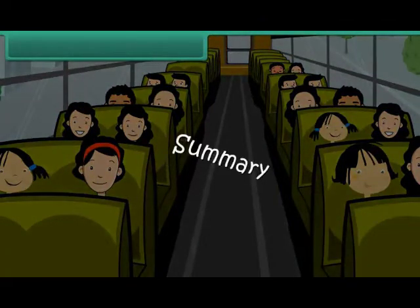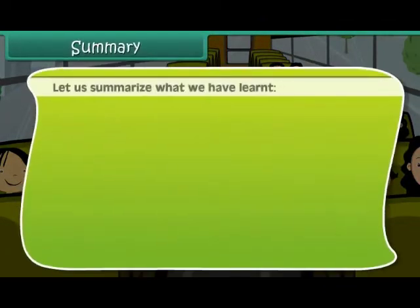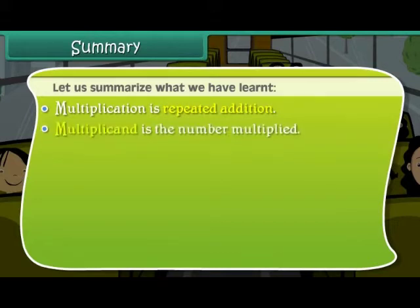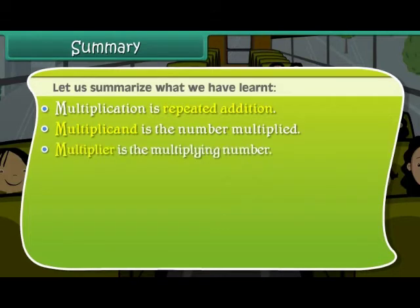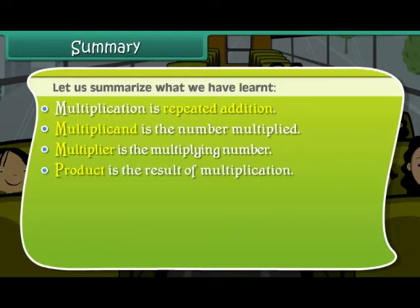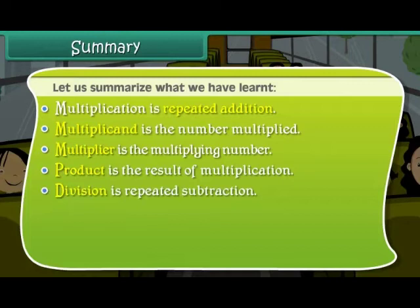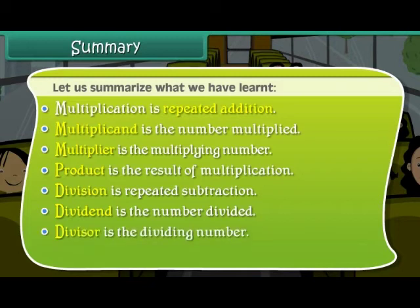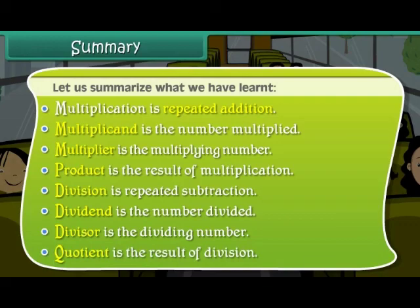Summary. Let us summarize what we have learnt. Multiplication is repeated addition. Multiplicand is the number multiplied. Multiplier is the multiplying number. Product is the result of multiplication. Division is repeated subtraction. Dividend is the number divided. Divisor is the dividing number. Quotient is the result of division.